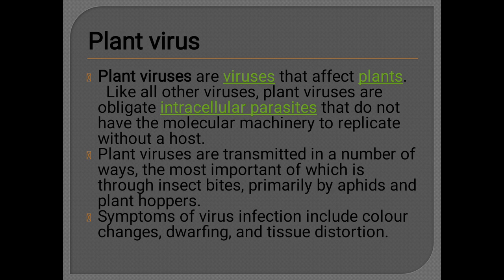Plant viruses are viruses that affect plants. Like other viruses, plant viruses are obligate intracellular parasites. They do not have the molecular machinery to replicate without a host. Plant viruses are transmitted in a number of ways, the most important of which is through insect bites, primarily by aphids and plant hoppers. Symptoms of virus infection include color changes, blotching, and tissue distortion.